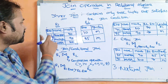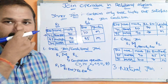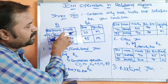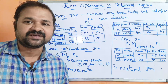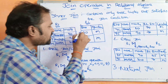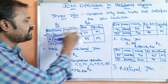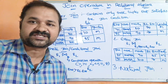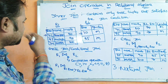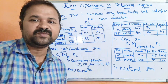Let us see what is the output. The join condition is R1.roll_number greater than R2.roll_number. It produces only those tuples that satisfy this condition. R1.roll_number is 72. It will be compared with R2.roll_number. The first tuple of the second relation is 70. 72 is greater than 70, so condition is satisfied. This row will be produced as the output: 72, Ramesh, 80.